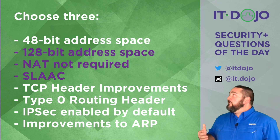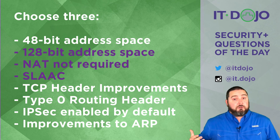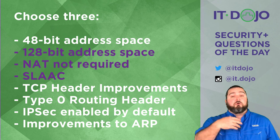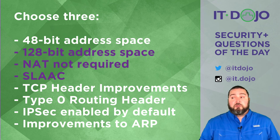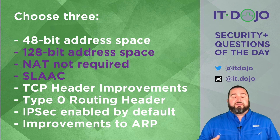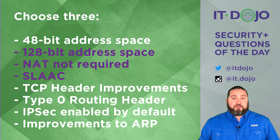The final choice says there are improvements to ARP. Not unless you call kicking ARP completely to the curb an improvement. We didn't improve ARP in IPv6 — we got rid of ARP in IPv6, which is what the whole previous question was about. We don't use ARP; we use neighbor solicitations and router solicitations in the form of neighbor discovery in order to find other nodes in the network. So no, there are no improvements to ARP.